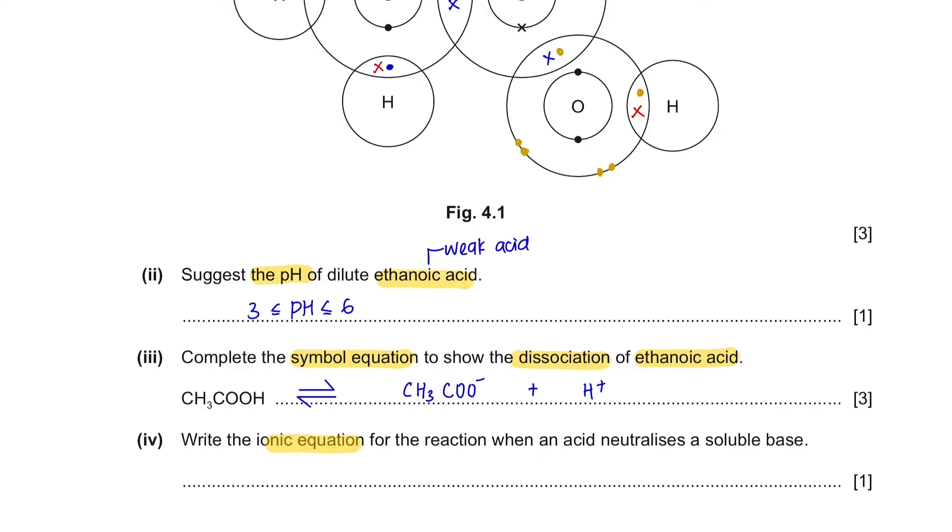Part 4: Write the ionic equation for the reaction when an acid neutralizes a soluble base. An acid is a proton donor whereas a base is a proton acceptor. Neutralizing acid and base will give you water as another product. So this is what your ionic equation would look like.